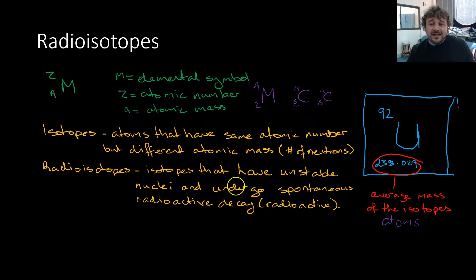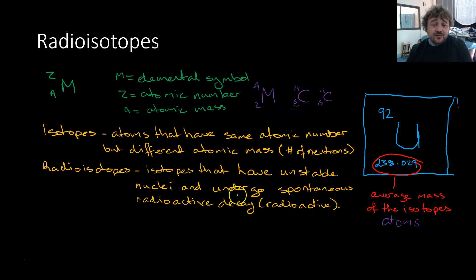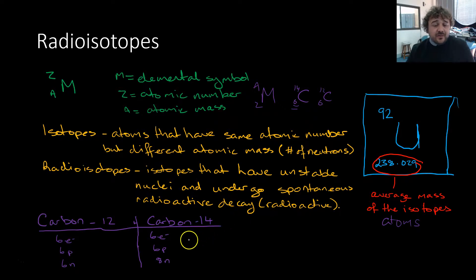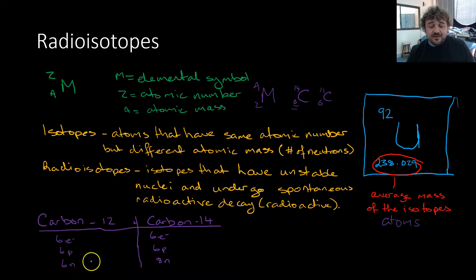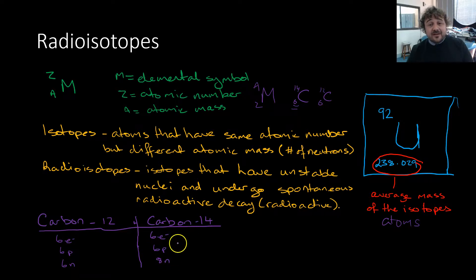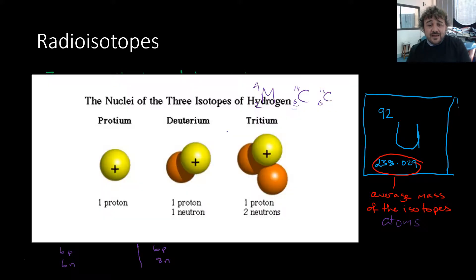A radioisotope is an isotope that is unstable. They have an unstable nucleus and they undergo spontaneous radioactive decay — in other words, radiation. For example, carbon 12 is the majority of carbon: 6 electrons, 6 protons, 6 neutrons. Carbon 14 is a small fraction of carbon with 6 electrons, 6 protons, and 8 neutrons. That one is unstable and will go through radioactive decay.